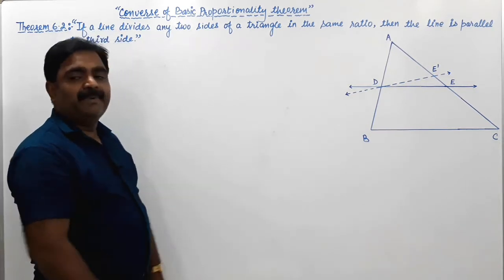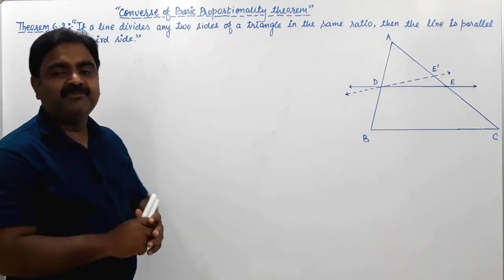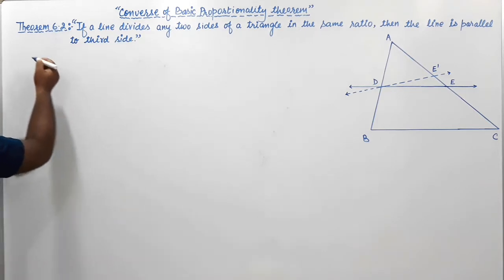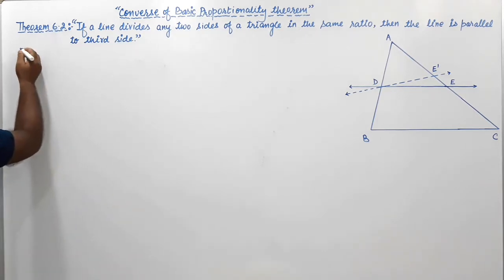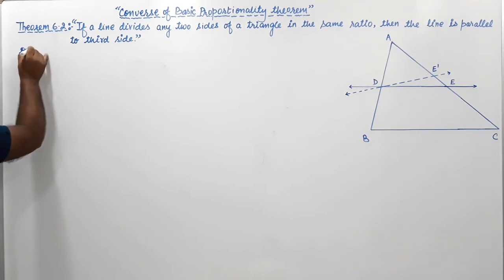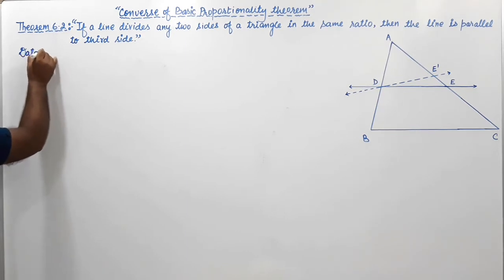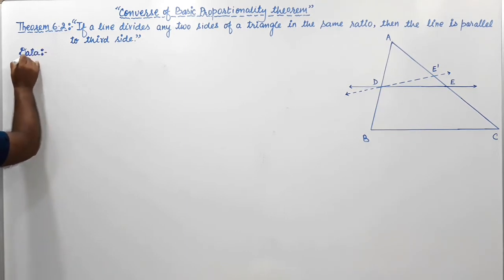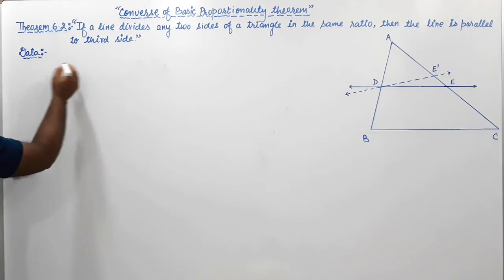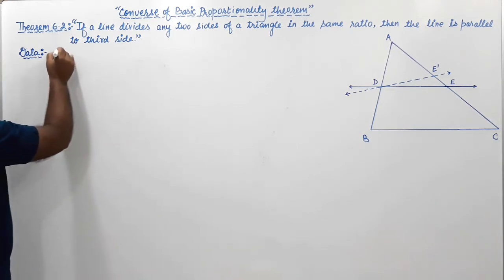How it will be parallel, we have to check. So write down the things in the theorem, which is the data — the information which is given. What is given? In triangle ABC...